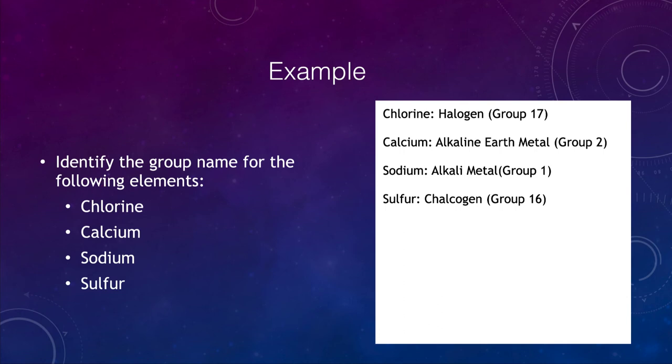We can look those up. You just have to get used to looking for where they are and remembering their symbols. Chlorine is Cl, calcium is Ca, sodium is Na, and sulfur is S. It may take some looking around the table to be able to identify these over time.